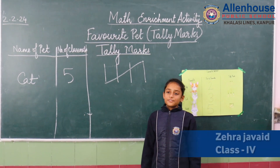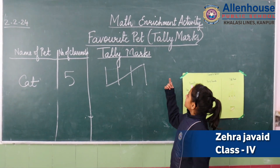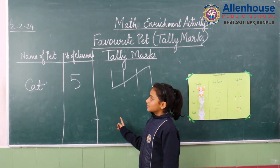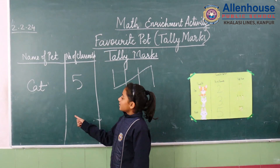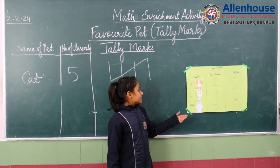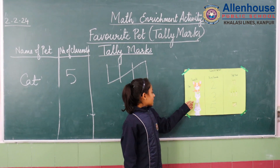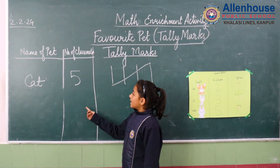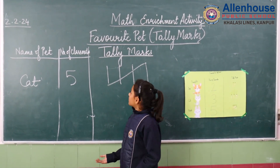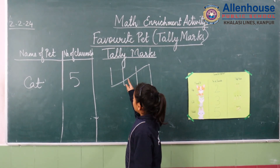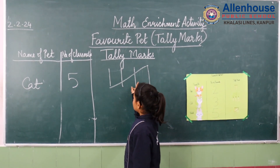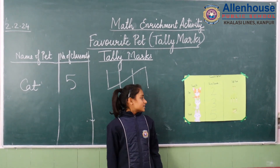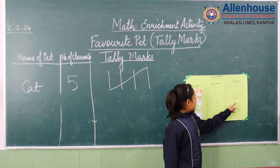Good morning everyone, today we will do the math enrichment activity: favourite pet tally marks. First, we will take the chart and divide it into three sections. In the first section, we will write the name of the pet, and here we will write the three pets that we have chosen. For example, here I have written cat and rabbit. Then in the second column, we will write the number of classmates — the number of classmates that like the pet. Then the third column will be tally marks, where you will show how many classmates there are using tally marks. For example, I have done two, three, and five.